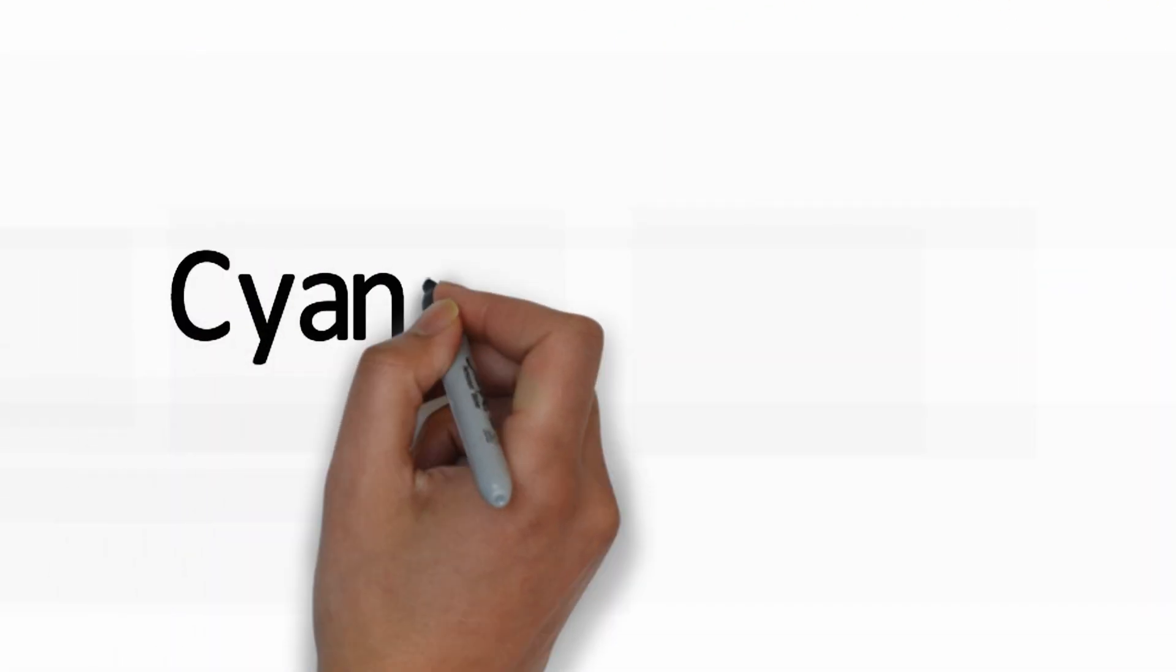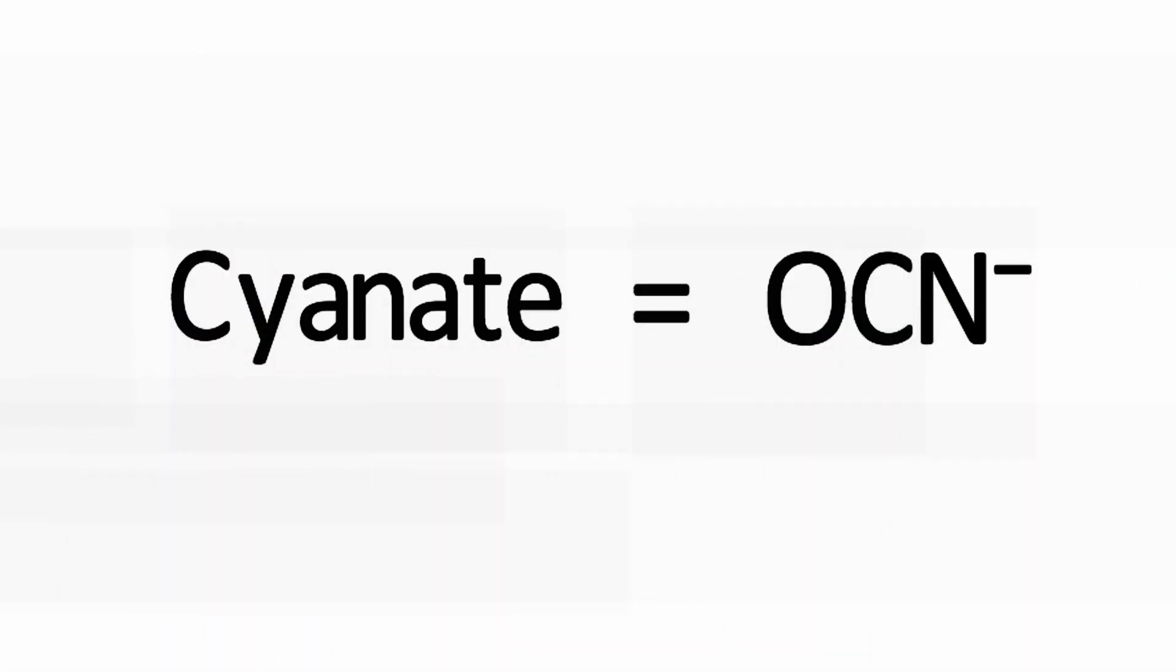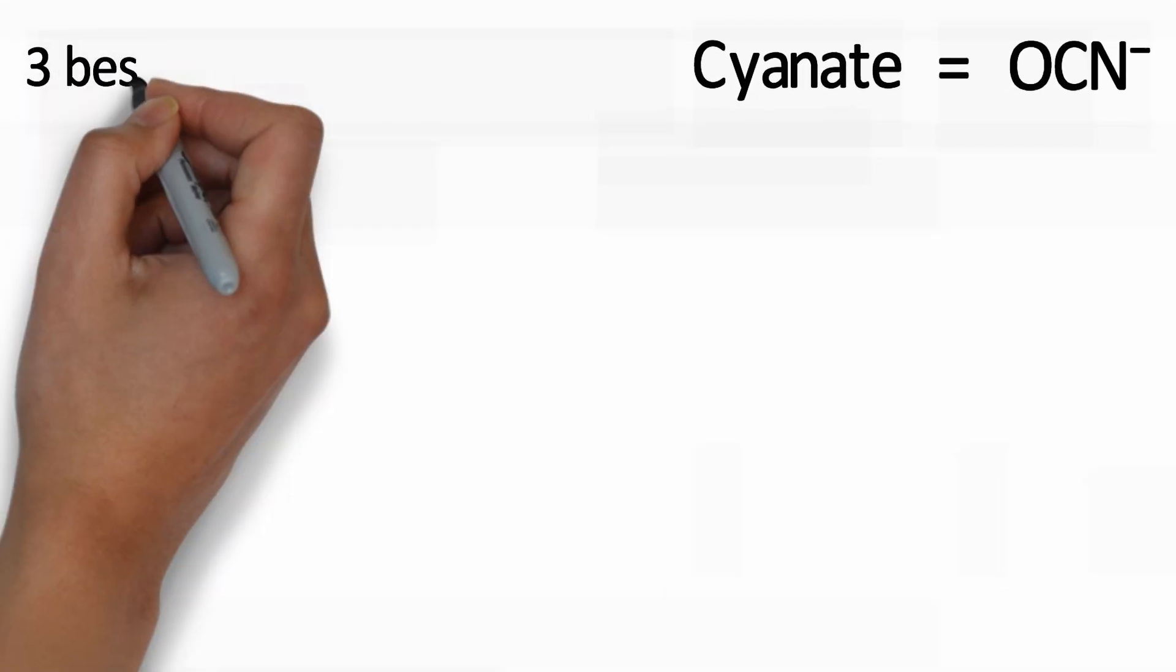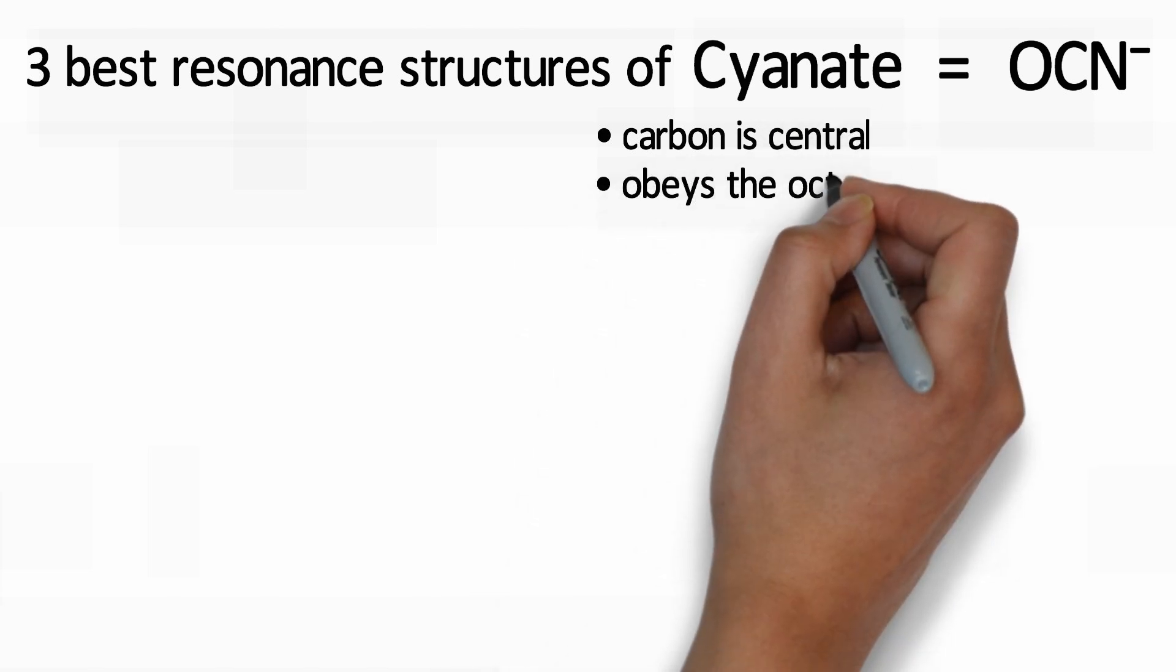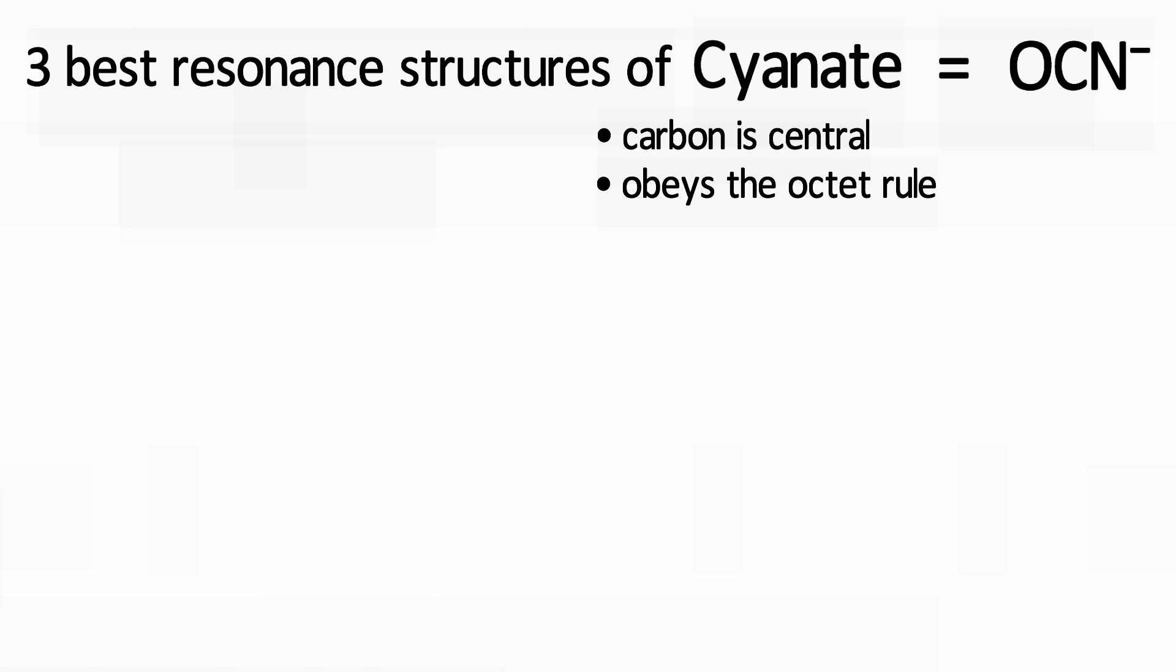Consider the polyatomic ion cyanate, OCN-. Please try to draw the three best resonance structures for cyanate. Keep in mind that the carbon is the central atom and the three best resonance structures all obey the octet rule. Once you're done, try to assign the formal charges for each atom. You can pause the video now.